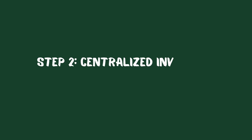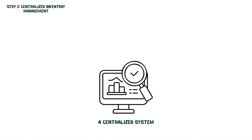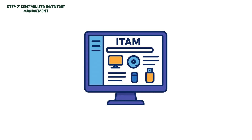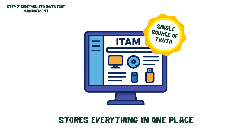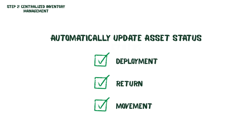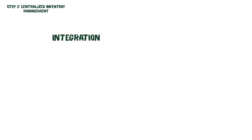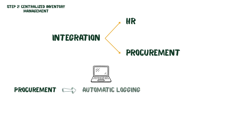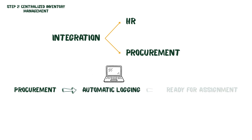Step 2: Centralized Inventory Management. After discovery, all assets should be organized in a centralized system. ITAM software stores everything in one place, giving you a single source of truth for your IT inventories. The system updates automatically whenever assets are deployed, returned, or moved, so your inventory is always accurate. It integrates with HR and procurement systems — when new laptops arrive from procurement, they are automatically logged into the system and are ready to be assigned to employees, with no need for someone to manually check stock levels.